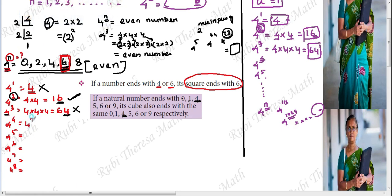4 power 5 can be split as 4 power 3 into 4 power 2. That is 4 multiplied 5 times total. A number ending with 4 when cubed also ends with 4, and 4 squared ends with 6.